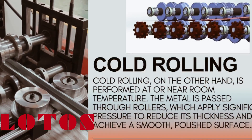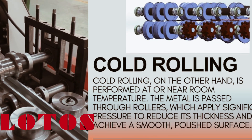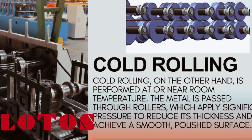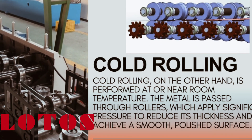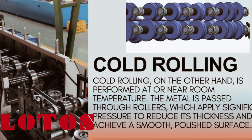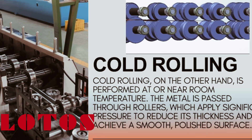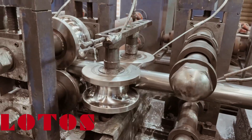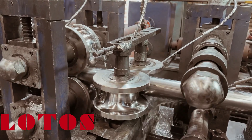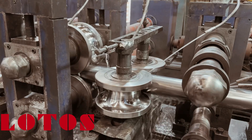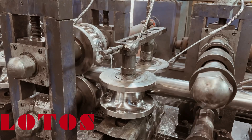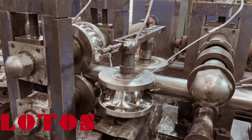Now that we've covered hot rolling, let's delve into cold rolling, a process that transforms steel into a different set of properties tailored for specific applications. Cold rolling, unlike hot rolling, occurs at room temperature or slightly below, which profoundly influences the characteristics of the steel. Cold rolling begins with hot rolled steel that has already been shaped and cooled. This steel is then passed through rollers at room temperature or slightly below, applying pressure to reduce its thickness and improve its surface finish. The process can be repeated multiple times to achieve the desired dimensions and properties.